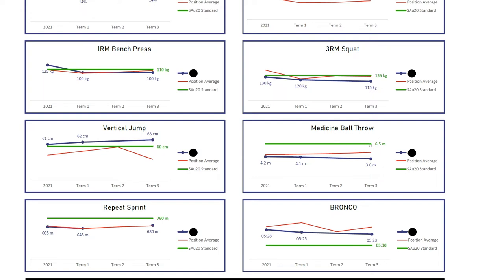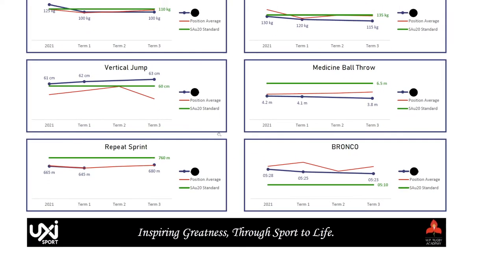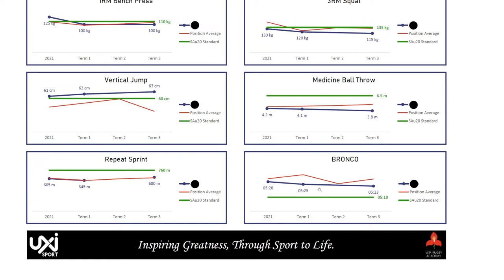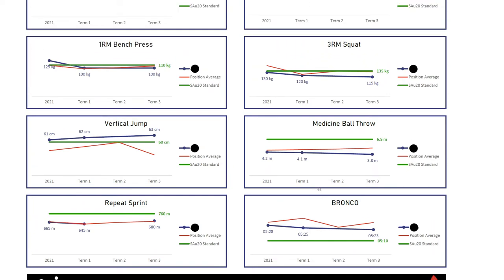Vertical jump: a higher score is better — this player is scoring higher than the SA Under-20 average. Medicine ball throw: this player is quite a way below the SA Under-20 average. Repeated sprint: a higher score is better because we rack up as many meters as possible — he is slightly below the SA Under-20 standard. The Bronco: we want a lesser time, so this chart has been flipped. The SA Under-20 time is 5 minutes 10 seconds, and he needs to shave off another 13 seconds to reach that standard.